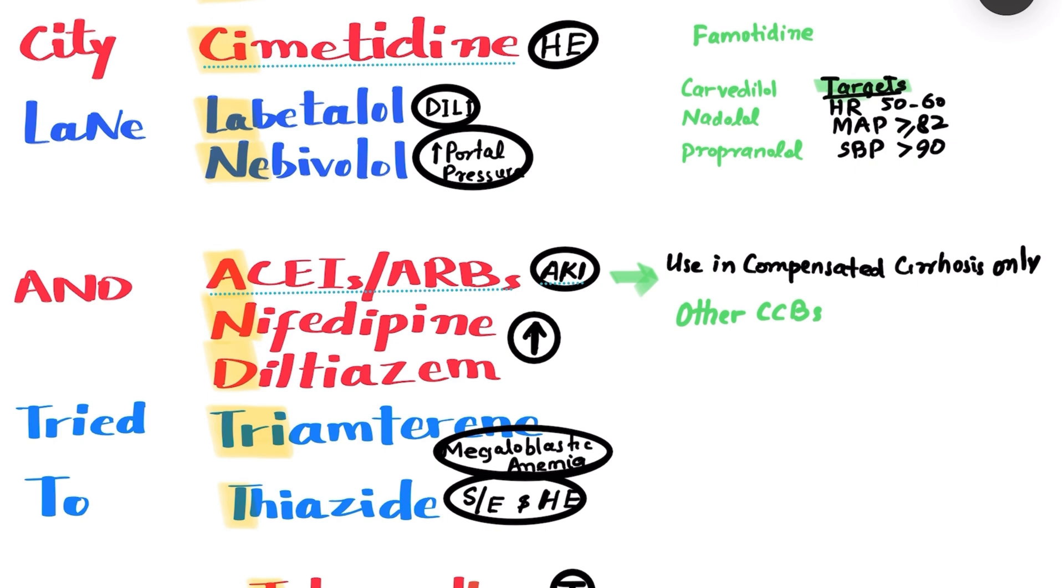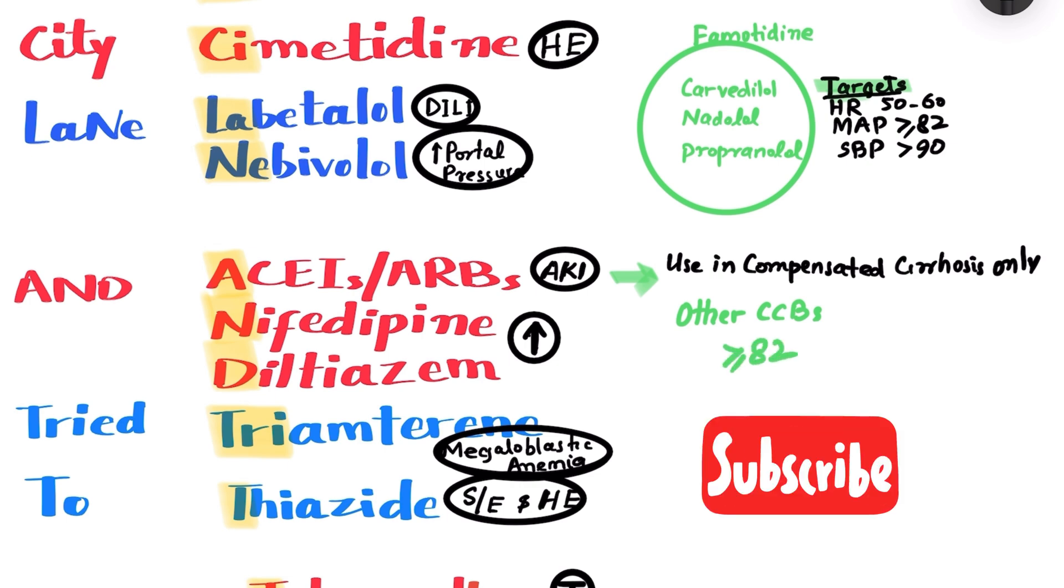The alternative antihypertensive options include the beta blockers that are mentioned earlier, and other calcium channel blockers, which are not metabolized by the liver, and should be started at the lower dosages. As a general rule, for antihypertensive management in cirrhotic patients, aim for higher MAP of equal to or greater than 82 mmHg, which is significantly higher than the regular MAP target of 65 in general population.